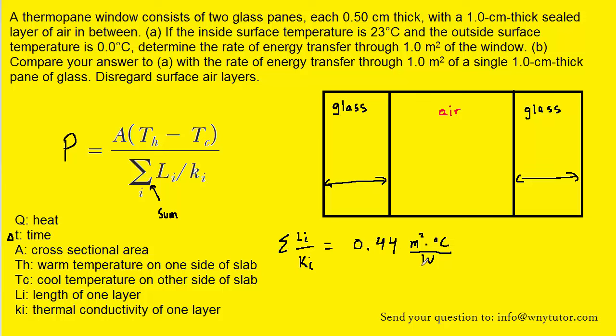And we get 0.44 meters squared degrees Celsius per watt. If you have any questions about the units there, please let me know in the comments and I'd be happy to clarify. So this value of 0.44 becomes the denominator of the energy transfer equation.